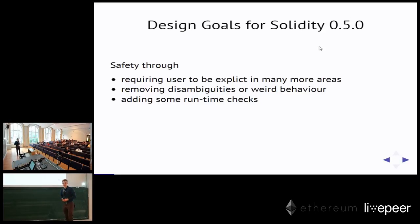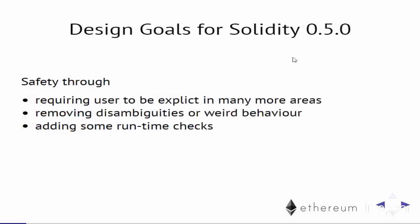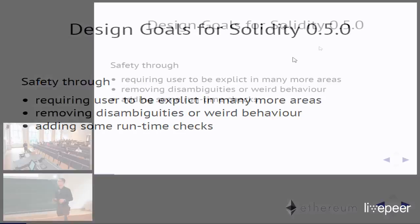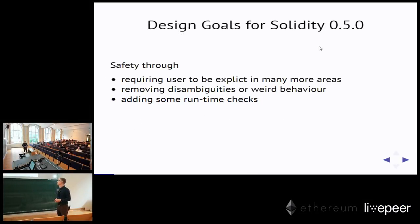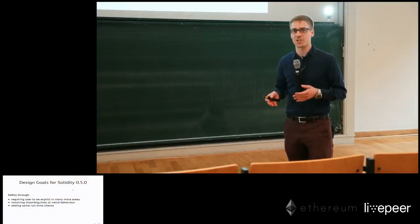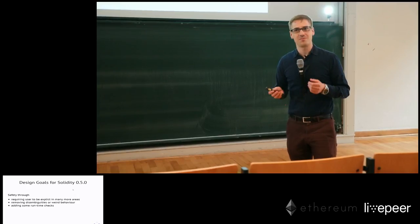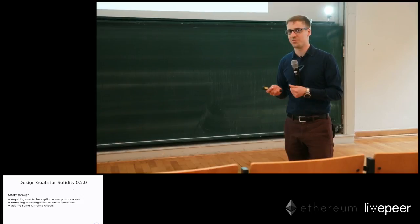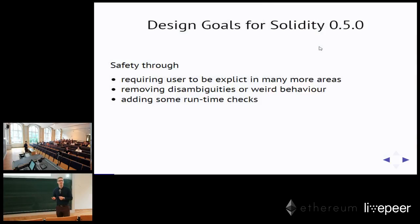For the breaking changes of 0.5.0, we mostly focused on safety. We noticed that it's often better to force the user to be much more explicit about some things. We will also remove some things which can be interpreted in different ways — we'd like everyone to be clear about the semantics of the language. We will also add some more runtime checks. Adding runtime checks is always tricky because the more checks you do, the more expensive the operations will be, and you fight between users who want cheap contracts and users who want safe contracts.